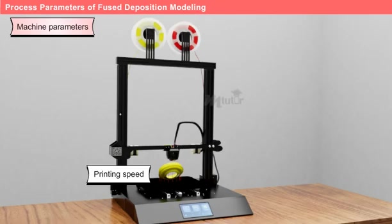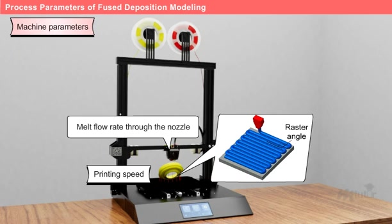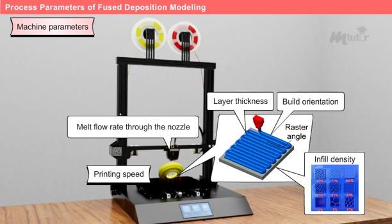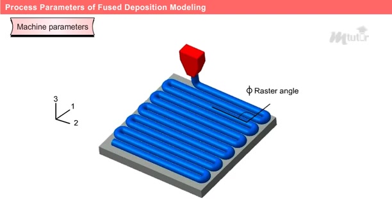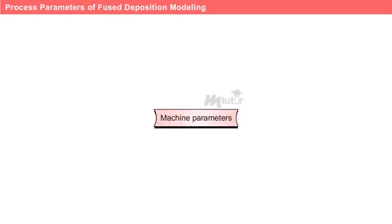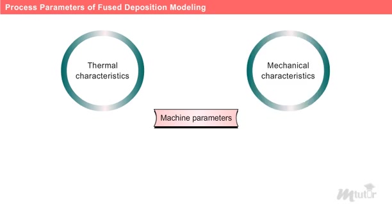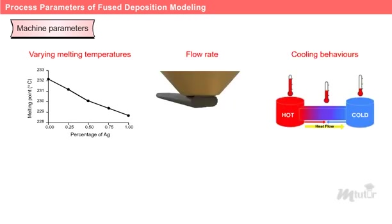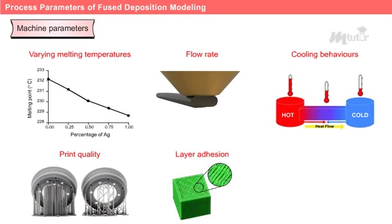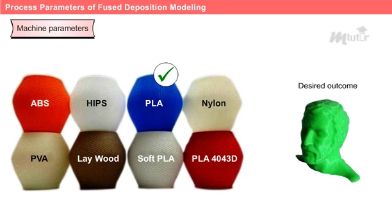Machine parameters include printing speed, raster angle, melt flow rate through the nozzle, air gap, layer thickness, infill density, build orientation, and temperature. Printing speed determines how fast the extrusion head moves during printing, affecting the overall printing time. The raster angle determines the direction in which the material is deposited, impacting the strength and surface finish of the model. For material parameters, properties such as thermal and mechanical characteristics significantly influence both the extrusion process and the performance of the final print. Different materials have varying melting temperatures, flow rates, and cooling behaviors, which can affect print quality, layer adhesion, and overall strength. Selecting the right material for our specific design requirements is crucial in achieving the desired outcome.